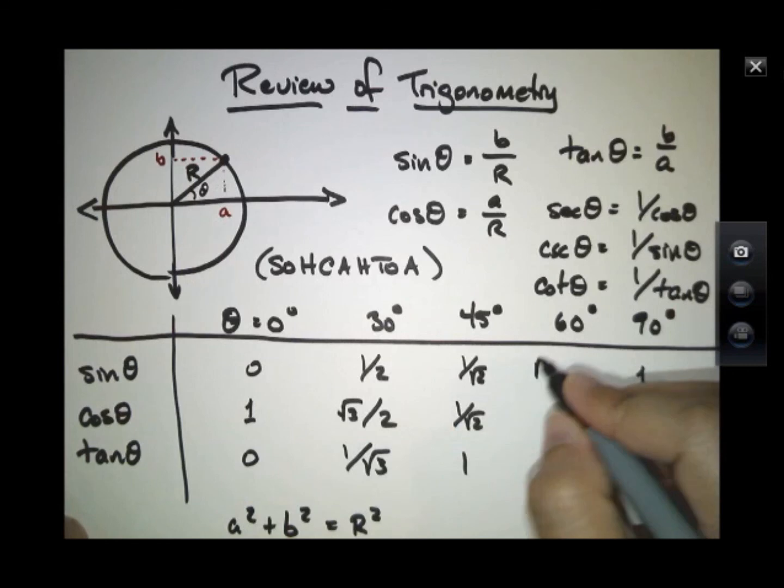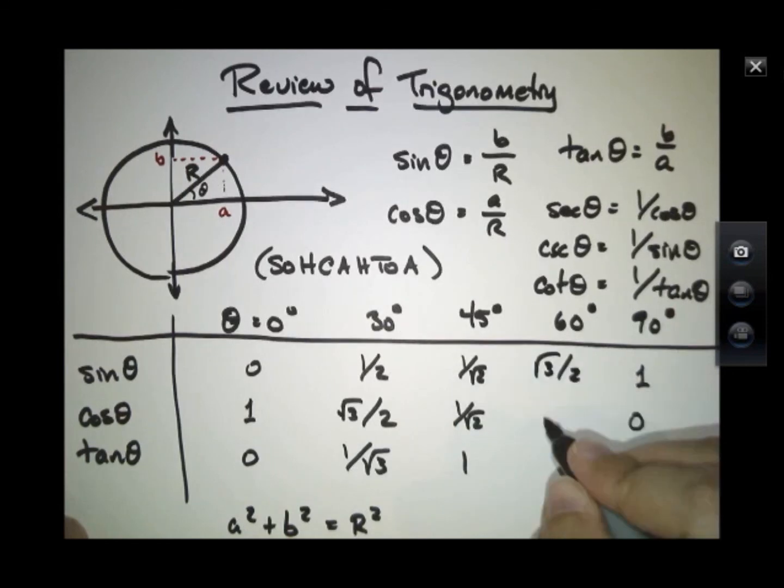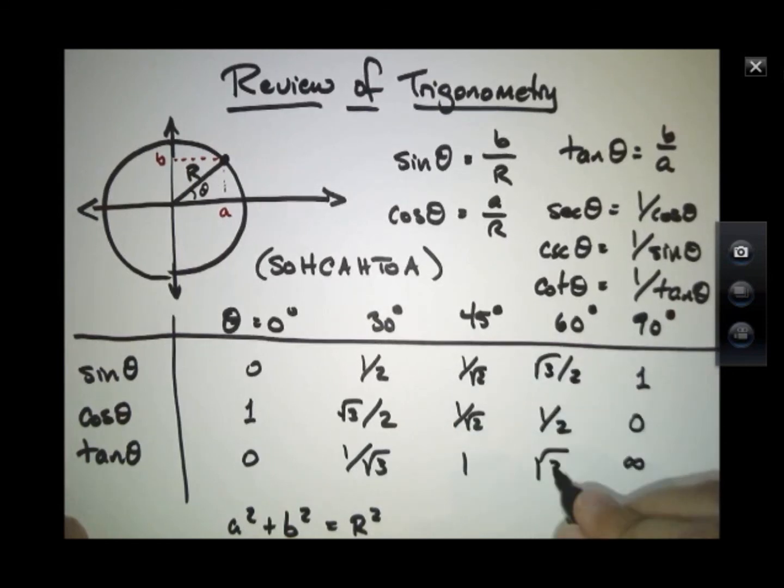So these two things switch places. This becomes root 3 over 2, this becomes a half, and the tangent becomes root 3.